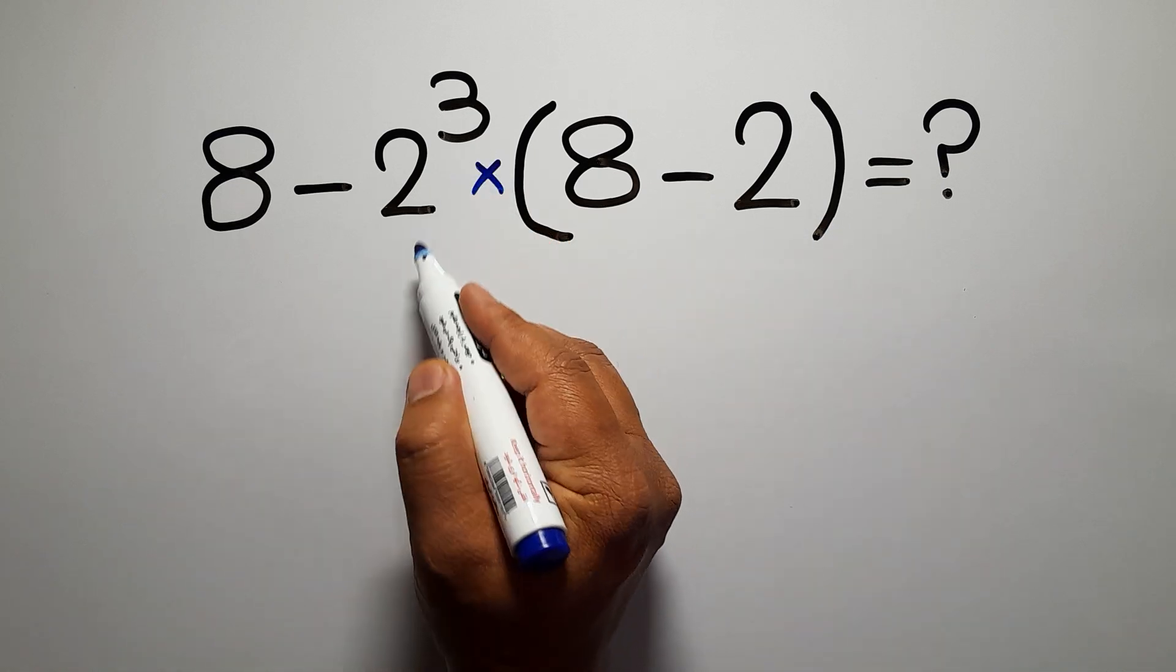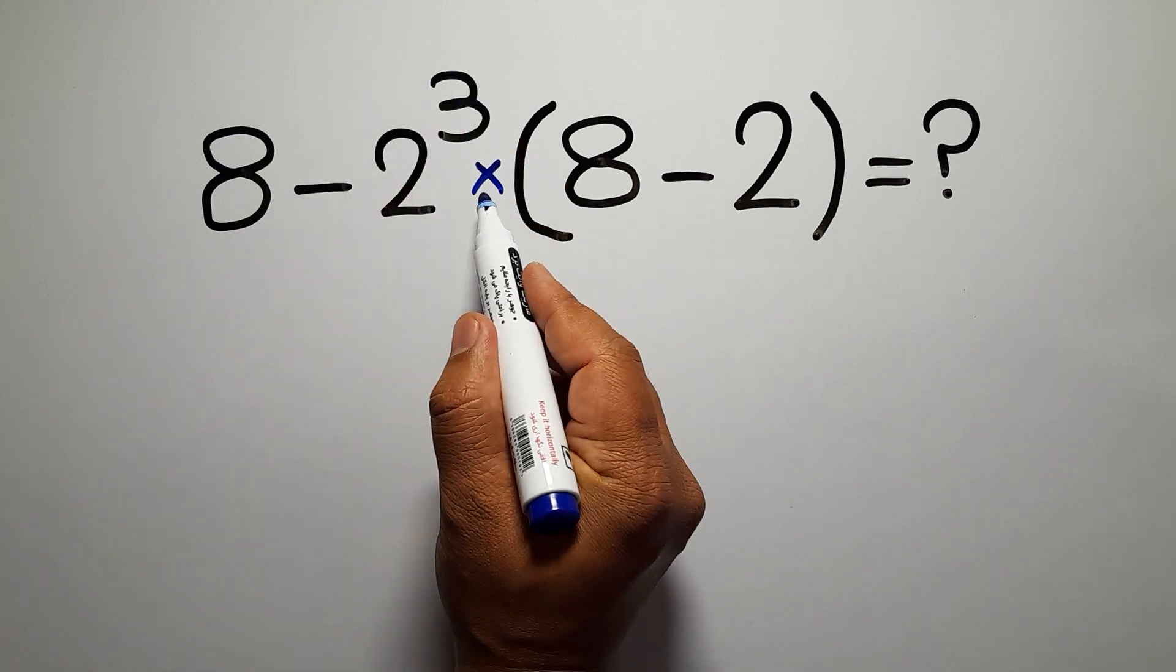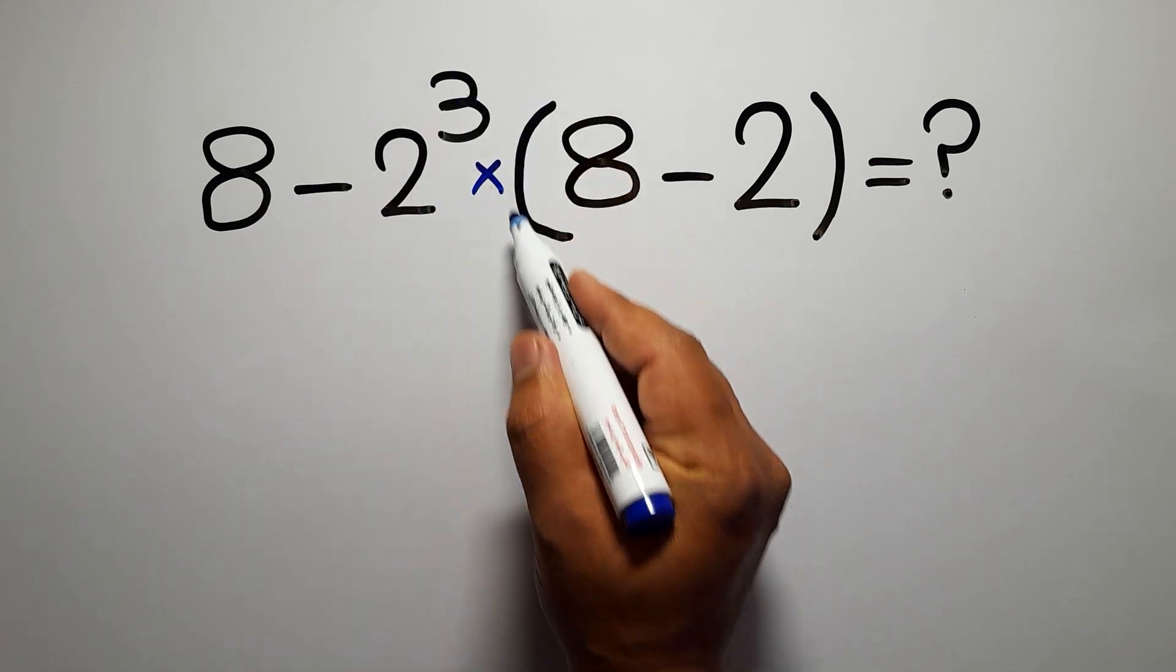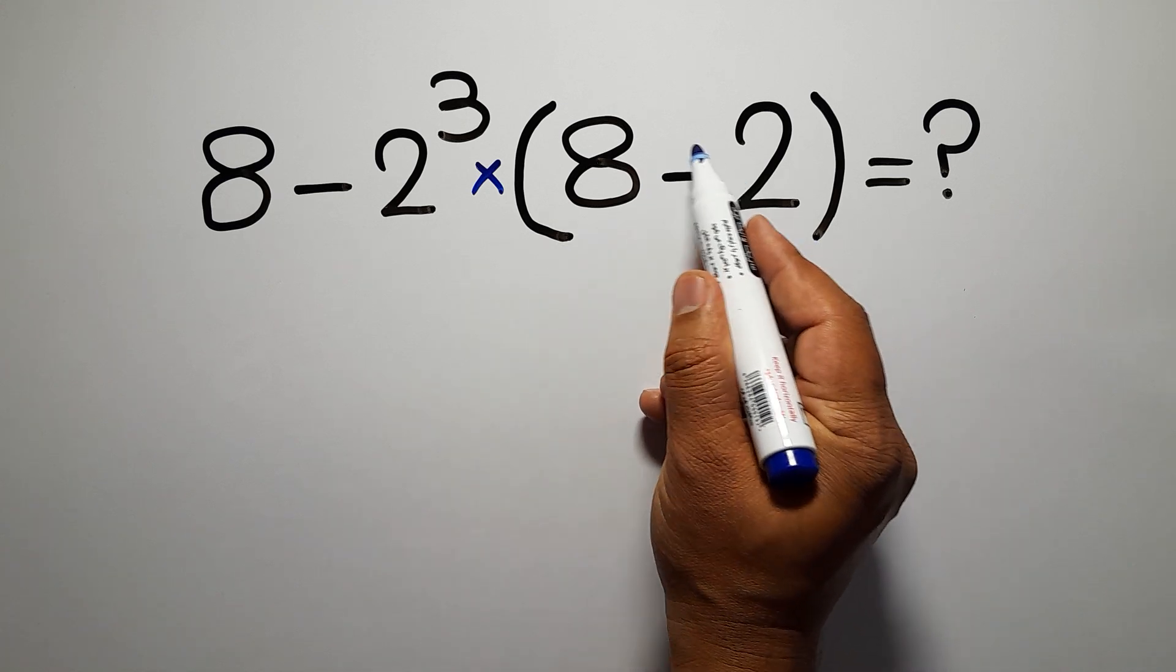So here we have a multiplication, and in this expression we have one subtraction, one exponent, one multiplication and one parentheses. Inside these parentheses we have one subtraction.